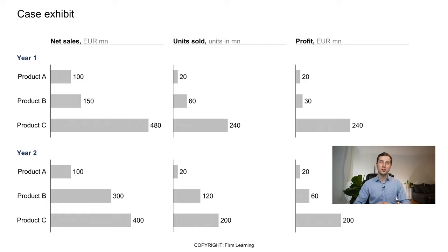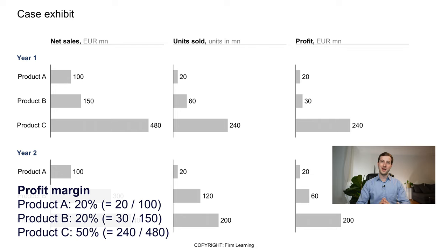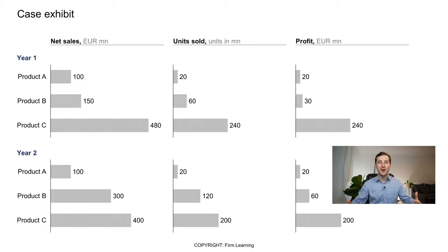A similar calculation that would be strong to mention without being asked is the profit margins for these different products. Product A: 20 million profit over 100 million sales is a 20% profit margin. Product B: 30 over 150 is also 20%. But product C: 240 over 480 is a 50% profit margin. So 20, 20, 50. This underlines the point that this company has a significant issue, because product C is the most profitable — not only in absolute numbers but also in relative terms, providing a 50% margin.